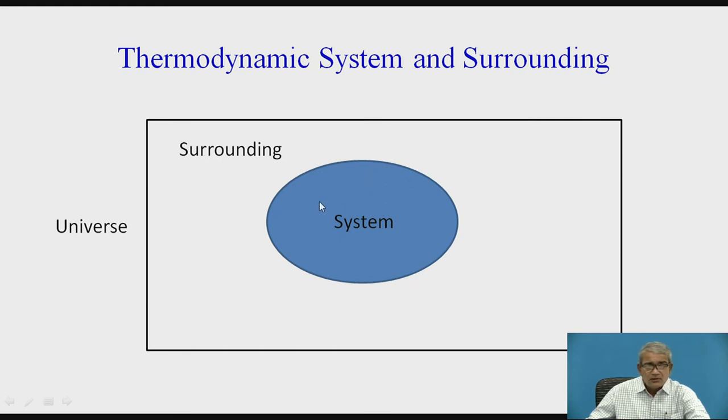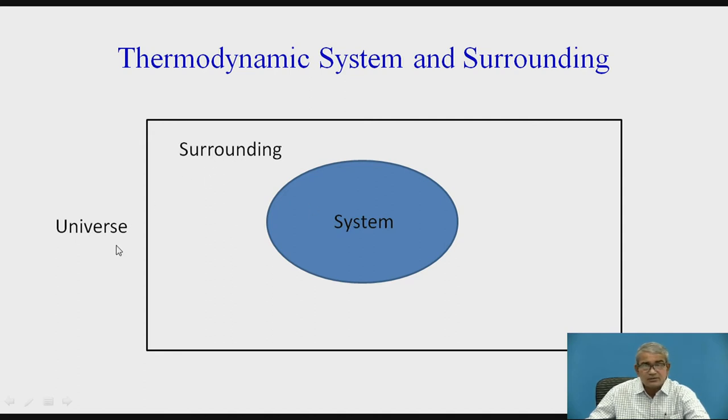The line which bifurcates the system and surrounding is called the boundary. When you go for a universe, it is the addition of the system and surrounding — then you call it the universe.